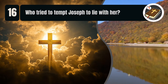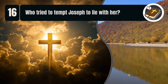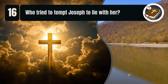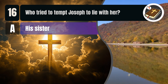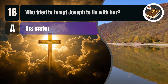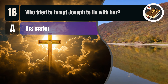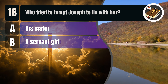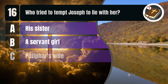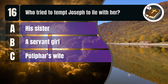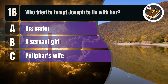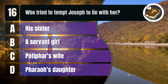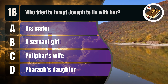Question 16. Who tried to tempt Joseph to lie with her? A. His sister. B. A servant girl. C. Potiphar's wife. D. Pharaoh's daughter.